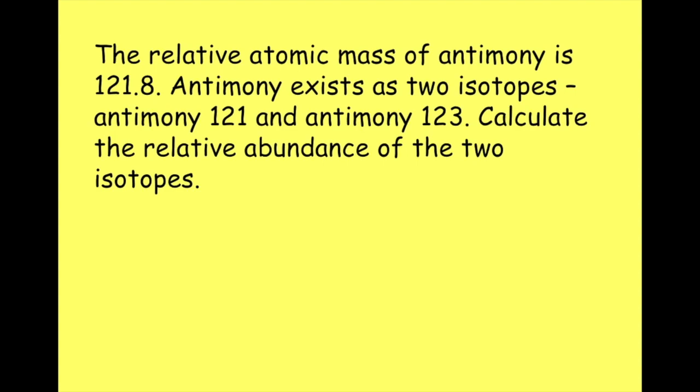Now here's a more difficult question for us. Something a bit new for the new chemistry syllabus. So it says that the relative atomic mass of antimony is 121.8, and it exists as two isotopes. Antimony 121 and Antimony 123. Calculate the relative abundance of the two isotopes.